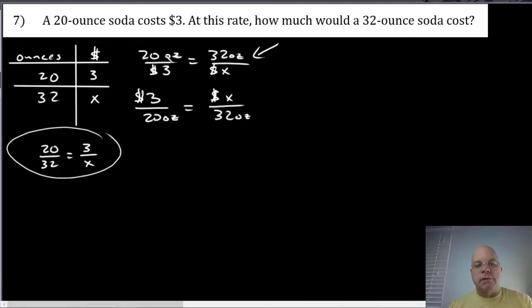We use cross products here to solve for the amount of money that 32 ounces would cost. So 20 times x, 20x, is equal to 32 multiplied by 3. 20x equals 96. I'm going to divide both sides by 20, and I get x is equal to 96/20.